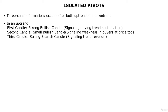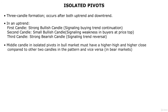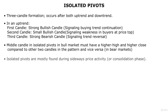The third and final candle is a very strong bearish candle with a large body, signaling a change in trend. The second or middle candle must have a higher low compared to the previous candle and the next candle. Exactly the opposite applies during a downtrend for isolated pivots. Isolated pivots are mostly used during sideways price activity, hence they present perfect opportunities when the market enters a consolidation phase after a sharp trend.